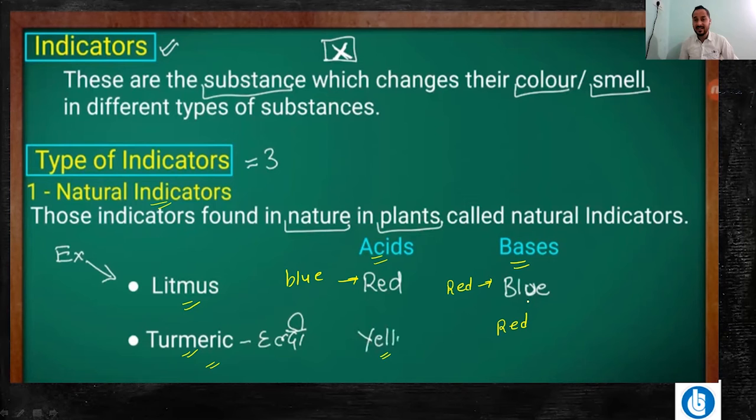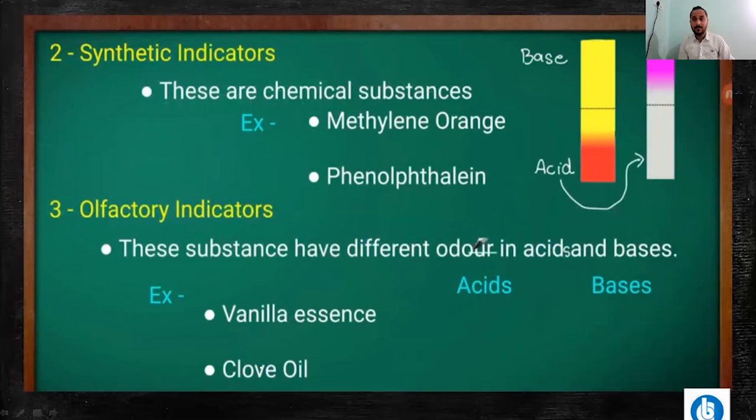Turmeric shows a reddish-brown colour change, so we understand with the help of indicators. The next type of indicators is synthetic indicators, which we prepare in the lab — we synthesize them in the lab. There are two types: methyl orange and phenolphthalein.